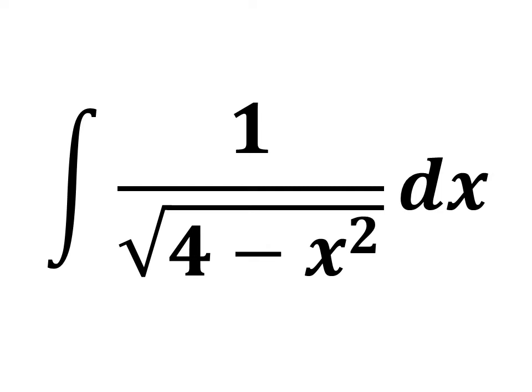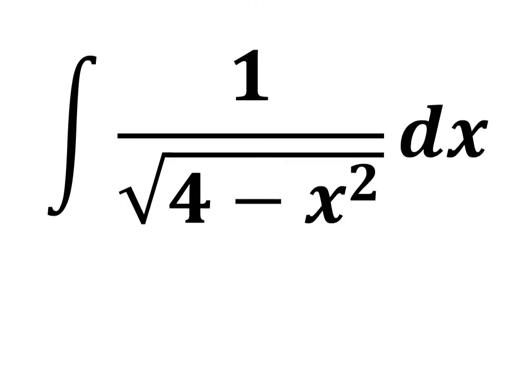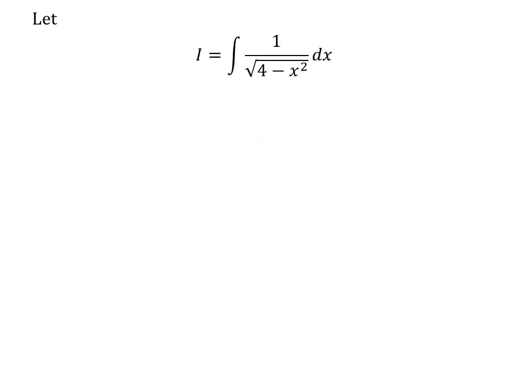In this video, we will learn to find the integral of 1 upon square root of 4 minus square of x. The substitution method has been applied to solve the integral. Let I be equal to the integral of 1 upon square root of 4 minus square of x with respect to x.